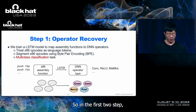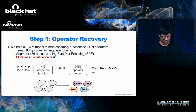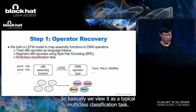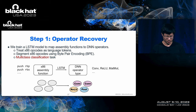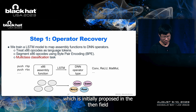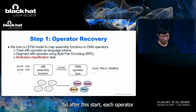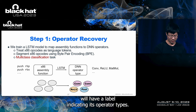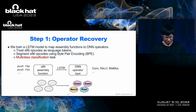In the first step, we try to map assembly functions to DN operators, viewing it as a typical multi-class classification task. We train an LSTM model to treat X86 code as long-range tokens and use the byte pair encoding method — initially proposed in the NLP field — to segment X86 opcodes. After this step, each operator will have a label indicating its operator type, for example a convolutional label, a ReLU label, or a fully connected label.